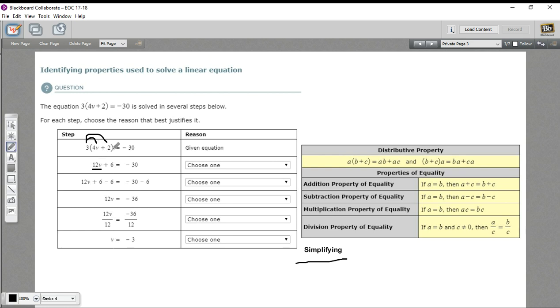And then 3 times 2 is 6, and that's what we've got in the next step. So that's what they did, they distributed, and you can probably guess the property here is going to be the distributive property. So that's the first step.